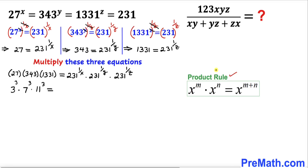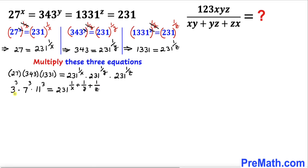Applying the product rule — since the bases on the right are the same, we add the exponents — the right-hand side becomes 231^(1/x + 1/y + 1/z). On the left, since the exponents are the same, we combine: (3 × 7 × 11)³ = 231^(1/x + 1/y + 1/z).